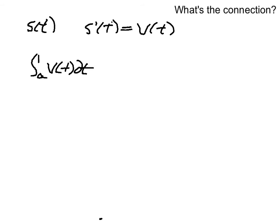So say we have a function s of t, which tells you a position over time. And then its derivative, s prime of t, is going to be the velocity, so v of t. So if I want the average value of velocity, average value of velocity would be the integral of v of t dt from a to b, and then over b minus a.